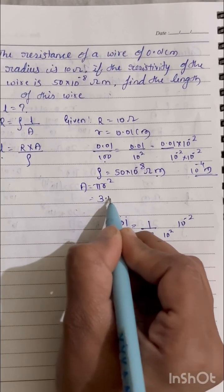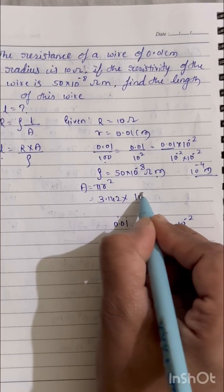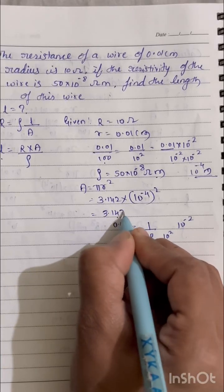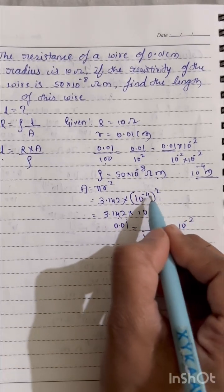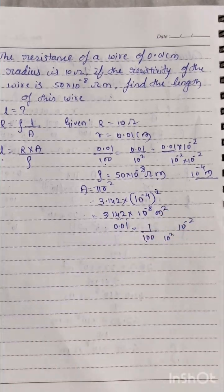So pi is 3.142 into r square. R we are having that is 10 power minus 4, bracket square. Now see here, 3.142 into 10 power minus 8. Now area we got in meter square.